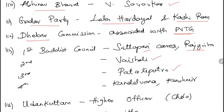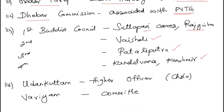Buddhist Councils: First in Rajgriha at the Saptaparni caves; Second in Vaishali; Third in Pataliputra; Fourth in Kundalvana in Kashmir. Also study who organized and patronized each council.